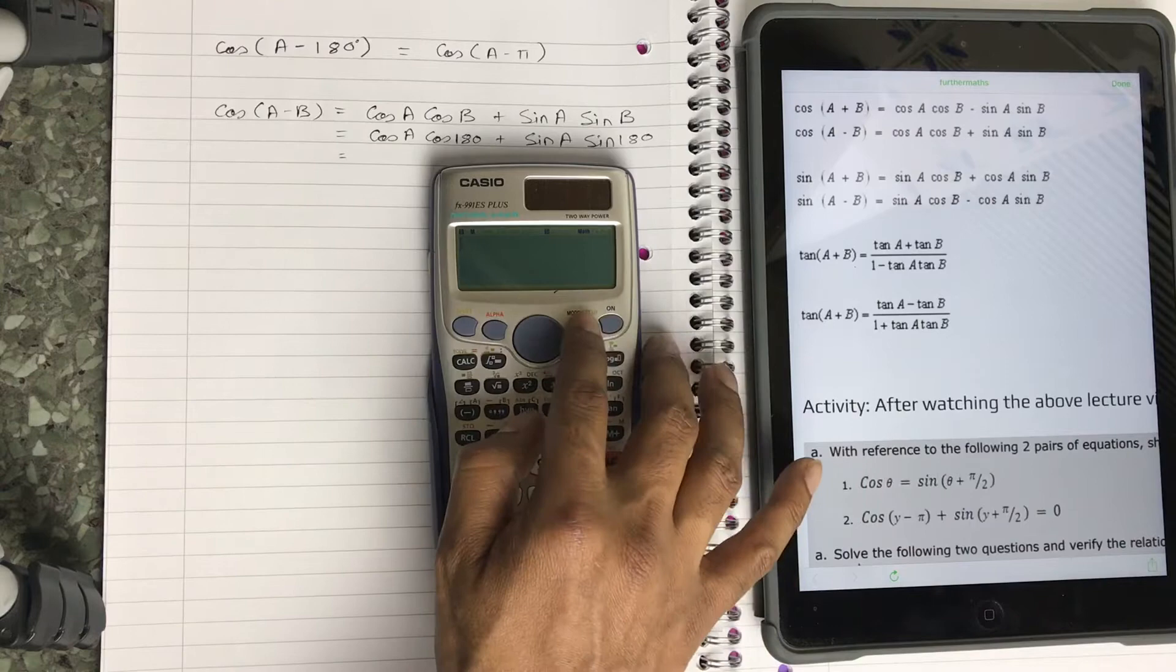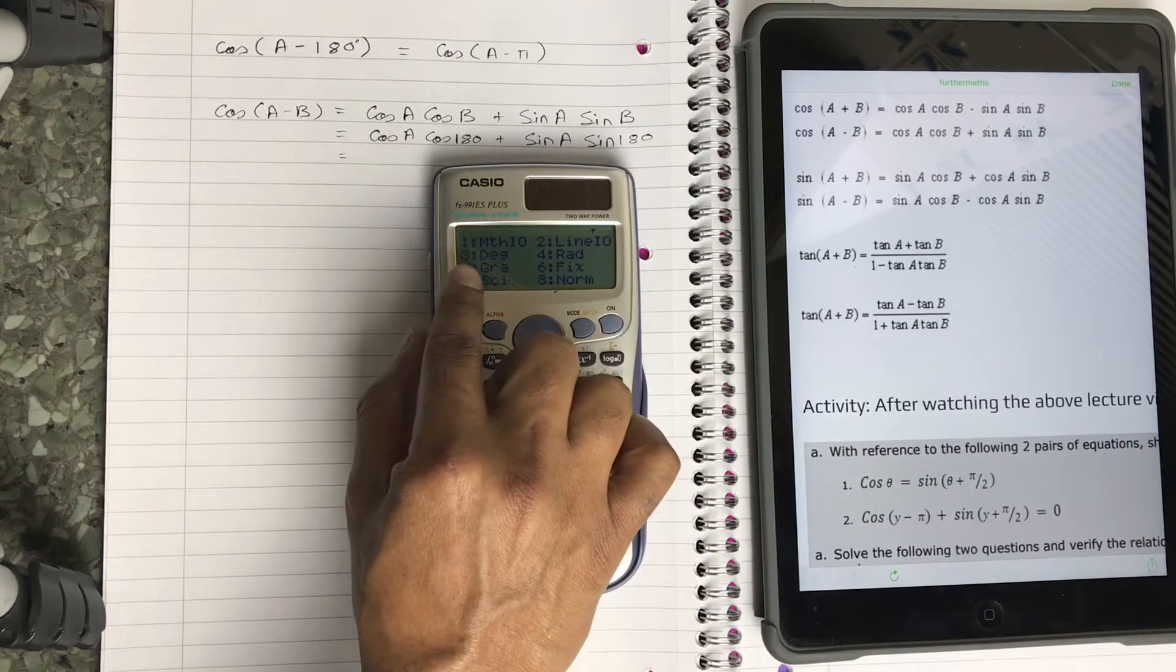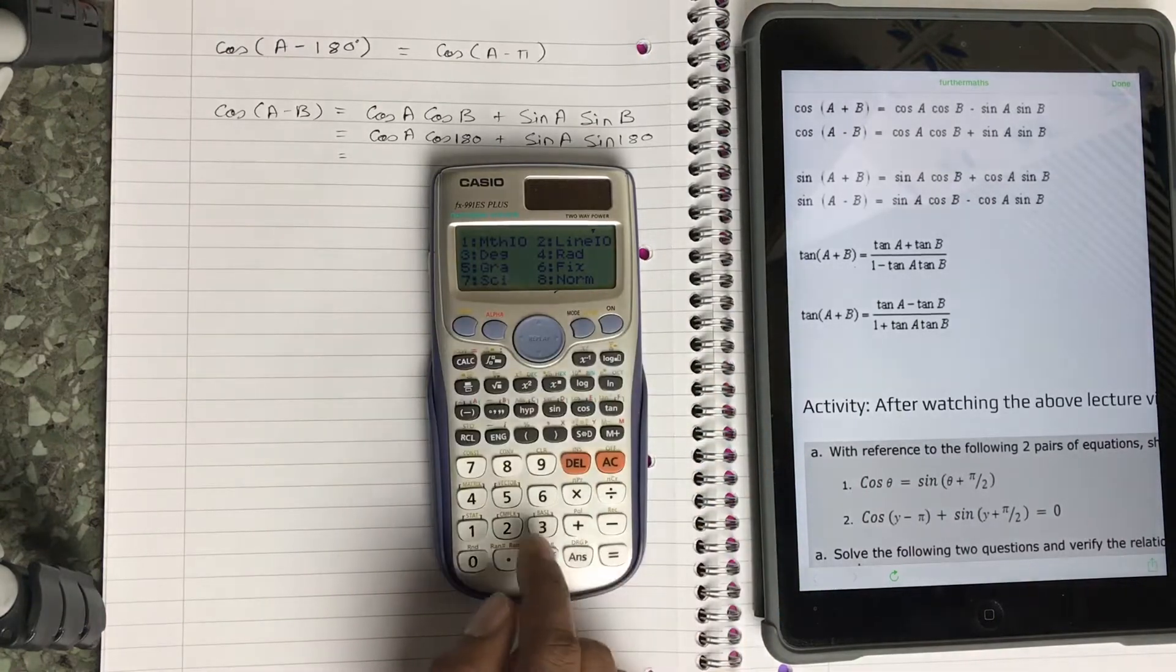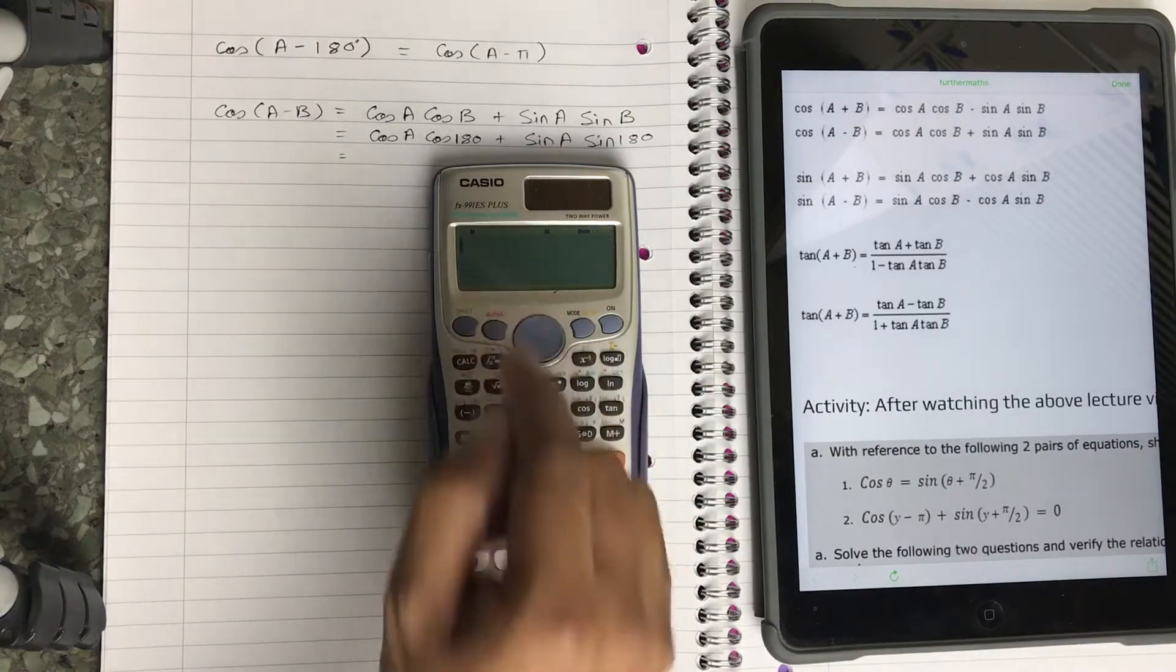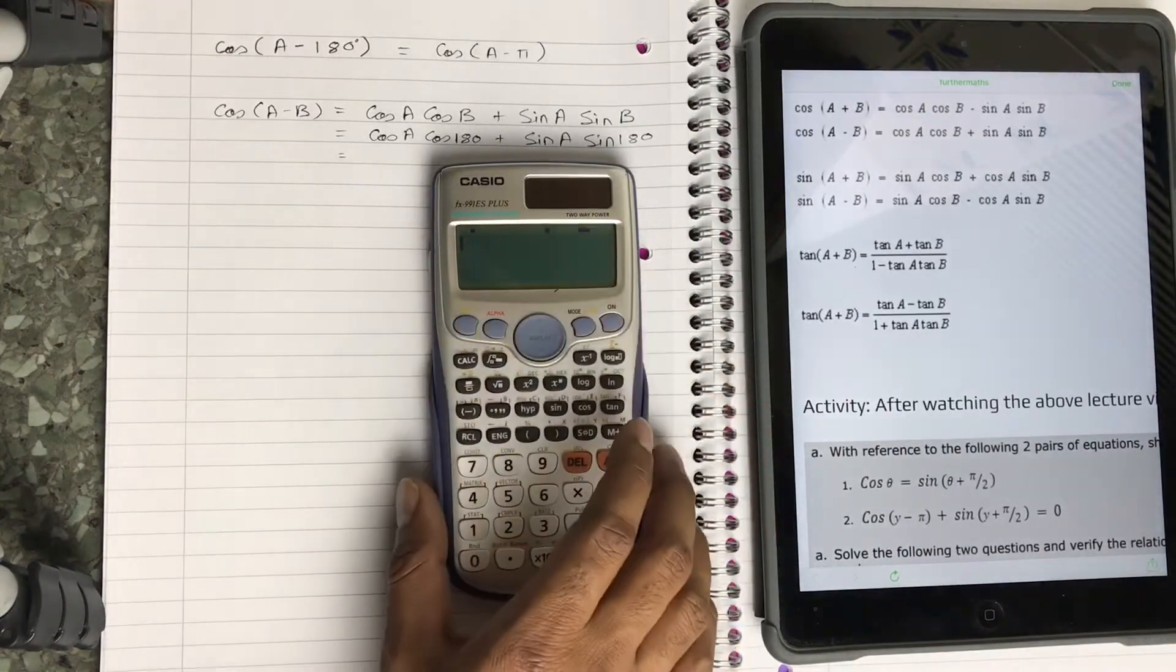So shift setup, and here's the degree - you press 3 for degrees and 4 for radians. I press 3, and now it is in degree mode, which shows by the small D sign there.